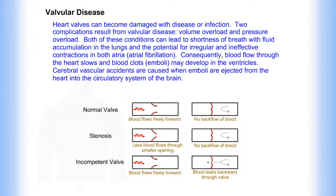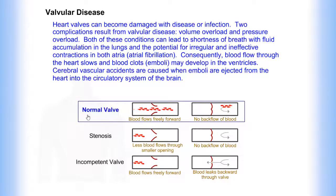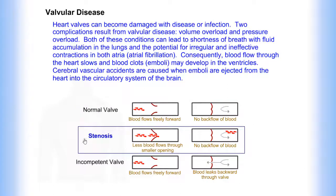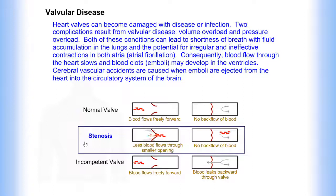Let's look at some examples of blood flow. With a normal valve, blood flows freely forward — there is no backflow of blood. With stenosis, less blood flows through a smaller opening, and there is no backflow of blood.